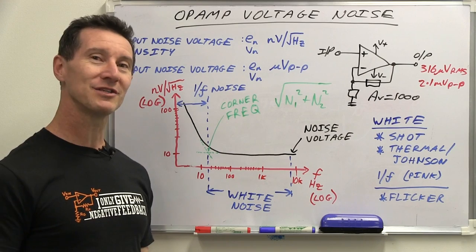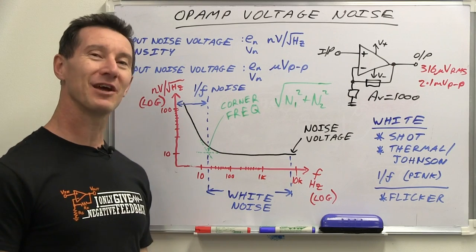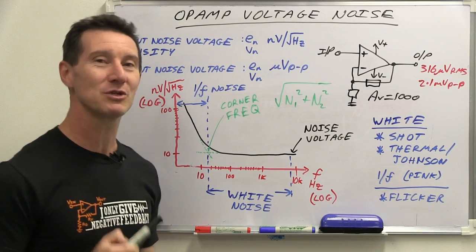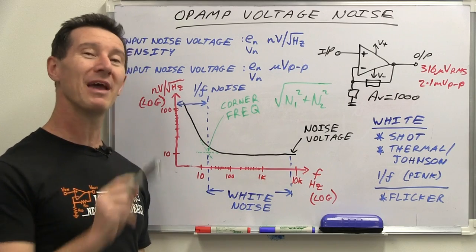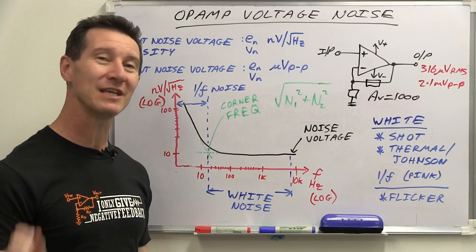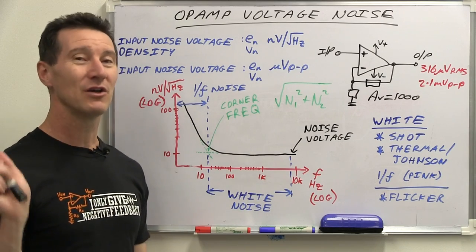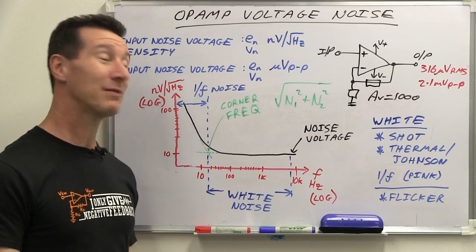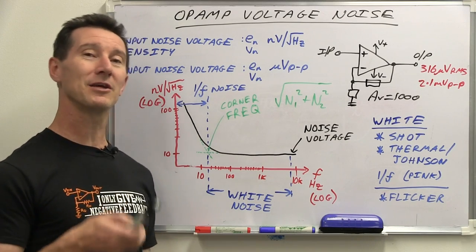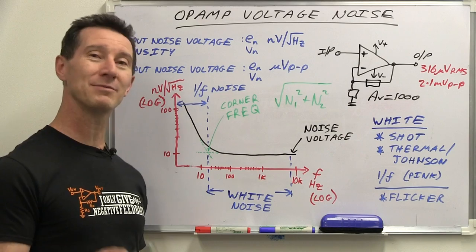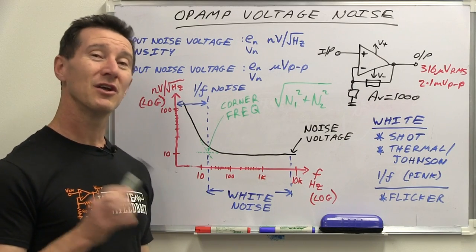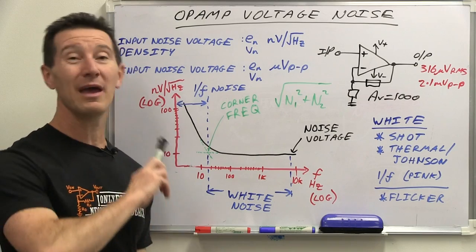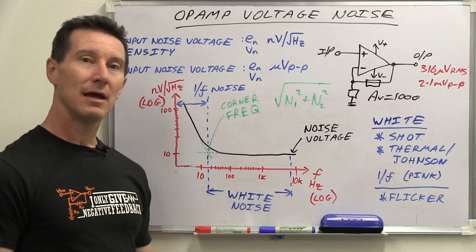And as always with data sheets, the marketers are going to fudge the numbers to give you the best possible banner spec. So beware — you have to actually go in there and look at the graphs, look at the individual data, and compare op-amps. It can actually be pretty hard to compare op-amps just from the data sheets. So you've got to be careful and know how to design it into your system.